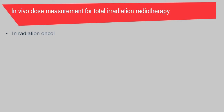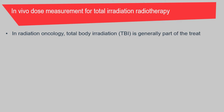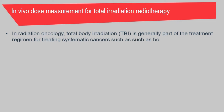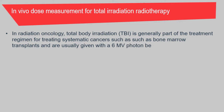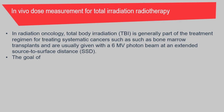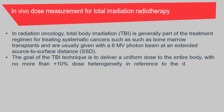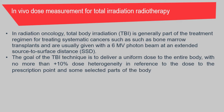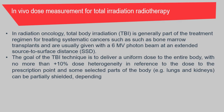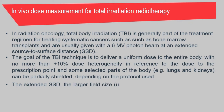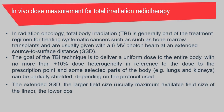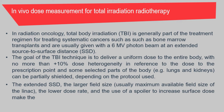For in vivo dose measurement for total body irradiation radiotherapy — in radiation oncology, total body irradiation (TBI) is generally part of the treatment regimen for treating systematic cancers such as those requiring bone marrow transplant. TBI is usually given with a 6 MV photon beam at an extended source-to-surface distance. The goal of the TBI technique is to deliver a uniform dose to the entire body with no more than 10% dose heterogeneity relative to the prescription point. Some selected parts of the body such as lungs and kidneys can be partially shielded depending on the protocol. The extended SSD, larger field size — usually the maximum available field size of the LINAC — and lower dose rate and use of a spoiler to increase surface dose make TBI dosimetry a challenging task.